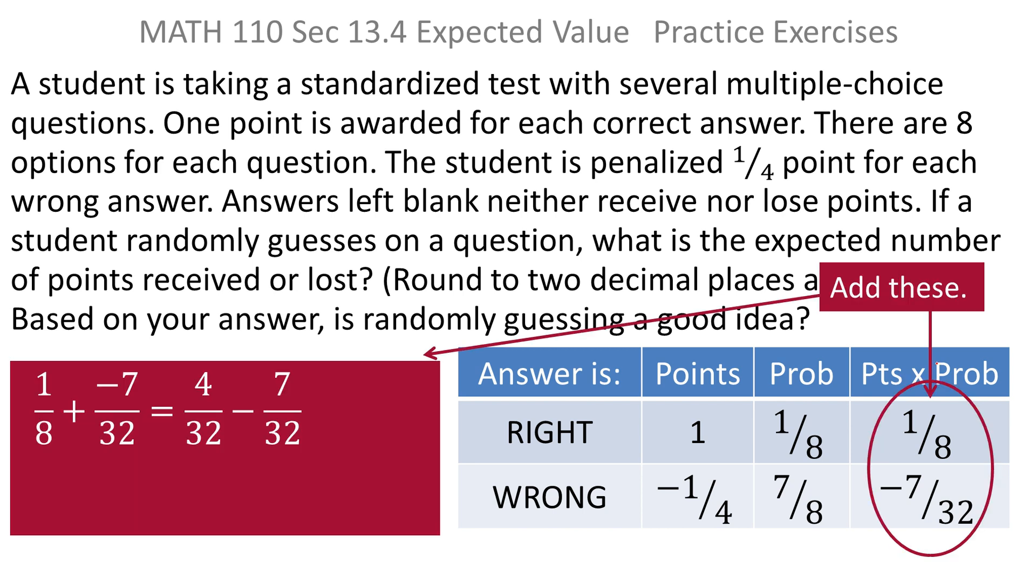Remember, you can't add fractions without a common denominator. So in order to add eighths and thirty-seconds, you have to change to a common denominator of thirty-two. So if you take the one-eighth and multiply the top by four and the bottom by four, you'll get four thirty-seconds.